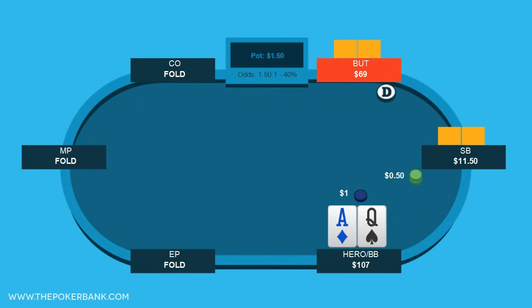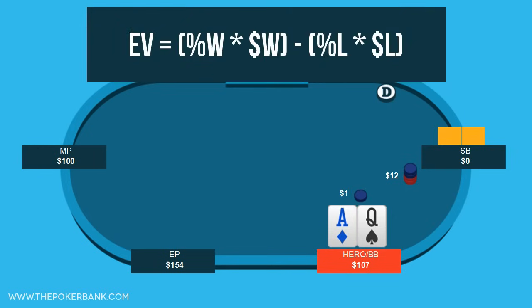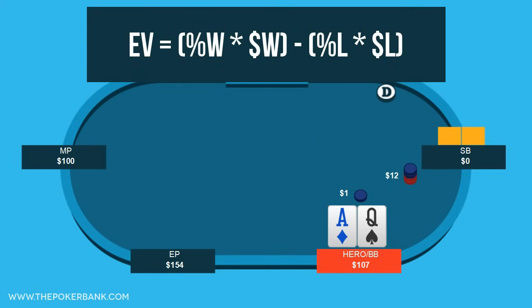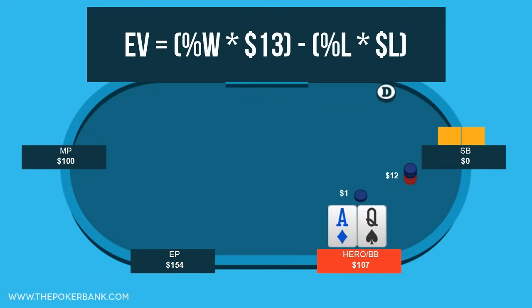In this hand it folds around to the small blind who goes all in. We hold ace-queen and are debating what to do. Now that we're armed with the knowledge of EV, we can prove this situation mathematically. If we call and win, we will win the small blind's stack plus our $1 big blind. Once money has been put into the pot — even a forced bet like the big blind — it no longer belongs to us. That means Money W is $1 plus $12 for $13 total. Money L is simply how much we lose if we call and lose, which is $11, since the $1 big blind no longer belongs to us.